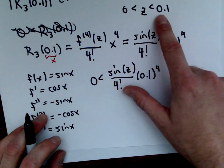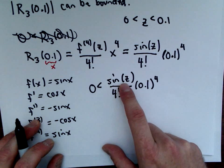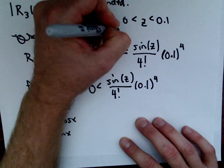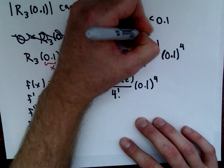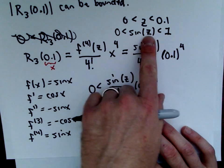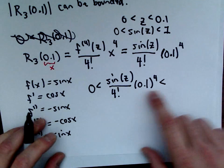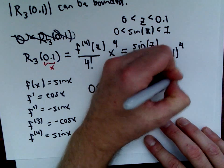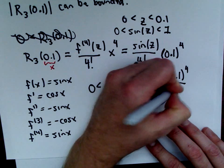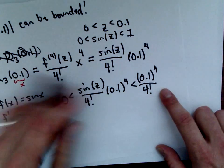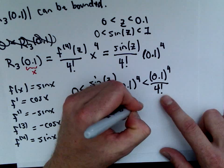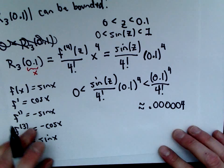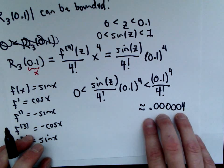On the interval from 0 to 0.1, sine of any value will be between 0 and 1 — strictly between 0 and 1. So since sine of z is less than 1 but greater than 0, this quantity is simply smaller than 0.1 raised to the fourth over 4 factorial. If you simplify that, 0.1 to the fourth over 4 factorial is roughly equal to 0.000004 — five zeros and then a four. This is the error, this is how much you're off by.